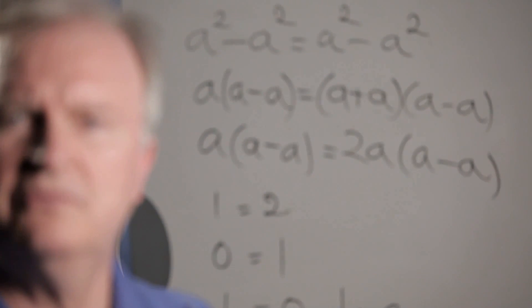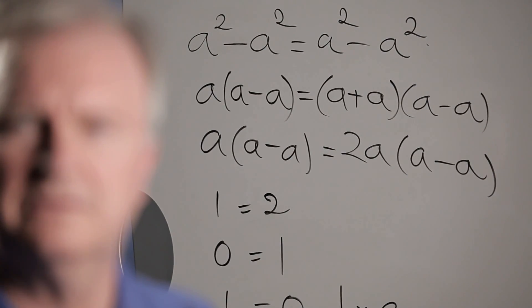In one respect, mathematics is unforgiving. When treated badly, it bites back. Here is a brief example where a common classroom error of elementary algebra allows us to prove that the Earth is flat. We start with the trivial equality: a squared minus a squared is equal to a squared minus a squared.